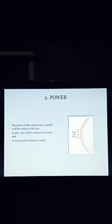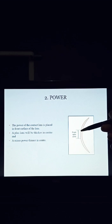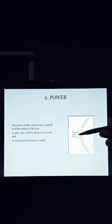Number 2: Power of contact lens. The power of the contact lens is placed in the front surface of the lens. The center of the contact lens is called the optic zone — this is where the power is placed. A plus lens will be thicker in the center, and a minus power lens will be thinner in the center.